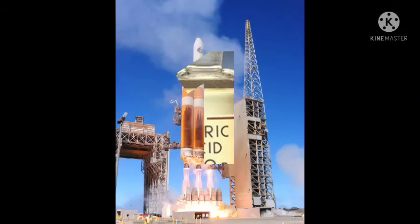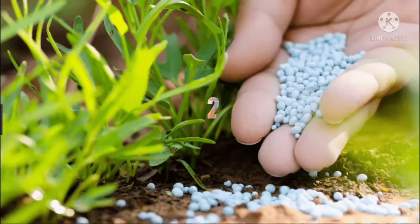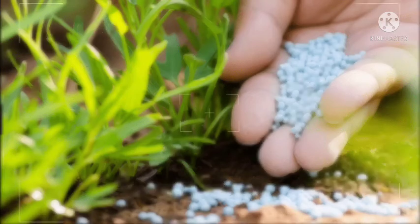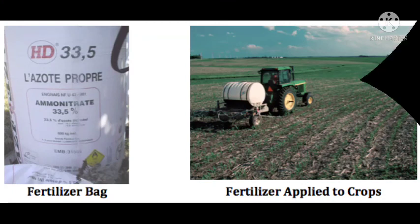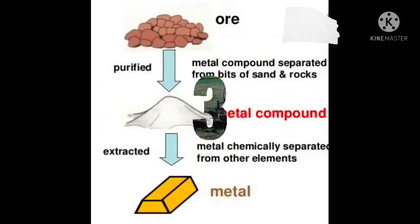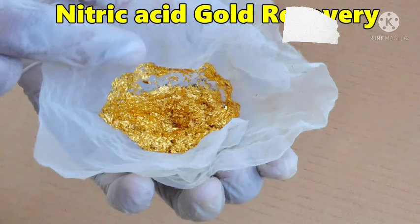Next is nitric acid. The main uses of nitric acid are as follows. First, it is used in rocket fuels. Second, it is used to manufacture fertilizers like ammonium nitrate. It is also used to extract some metals from their ores.